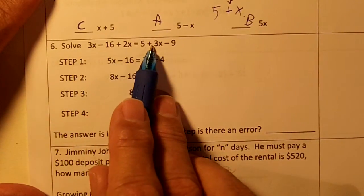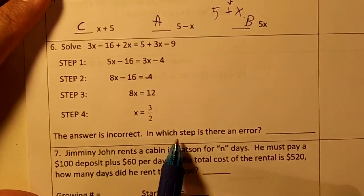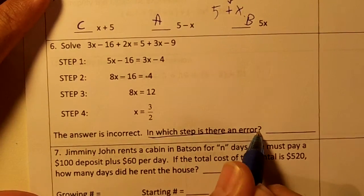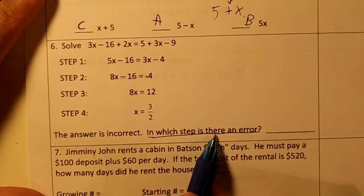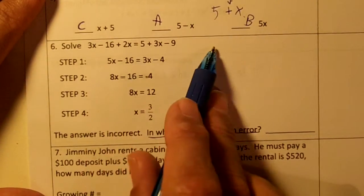Number six, we're going to solve this, go through some steps. The answer is incorrect. In which step is there an error? So we're trying to find which one of these steps has an error. Let's go through and do this problem.